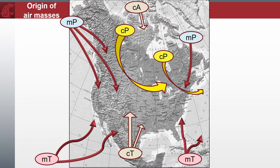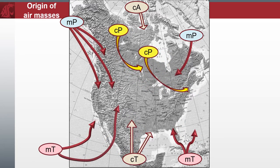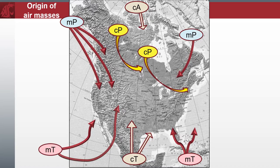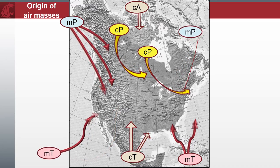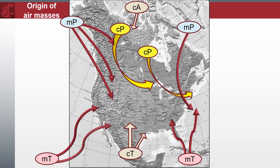Cold fronts and occluded fronts generally move from west to east, while warm fronts move poleward. Because of the greater density of air in their wake, cold fronts and cold occlusions move faster than warm fronts and warm occlusions. Mountains and warm bodies of water can slow the movement of fronts. When a front becomes stationary and the density contrast across the frontal boundary vanishes, the front can degenerate into a line separating regions of differing wind velocity, known as a shear line. This is most common over the open ocean.